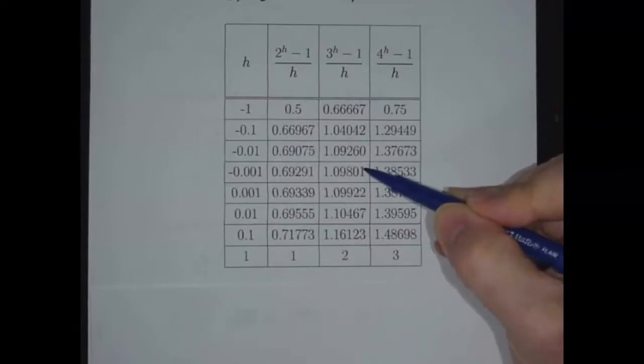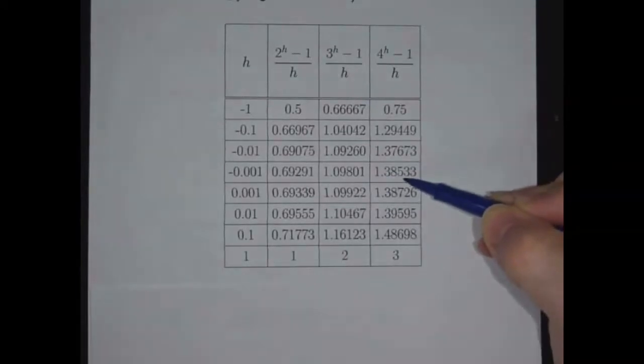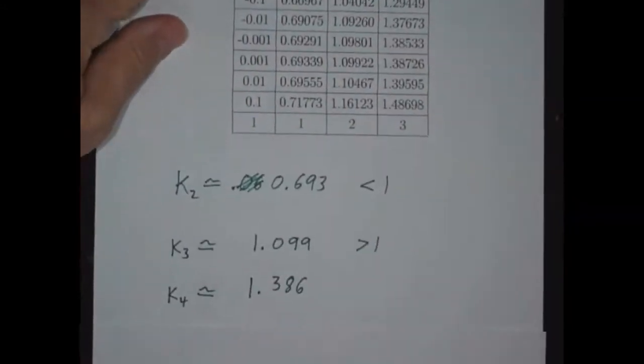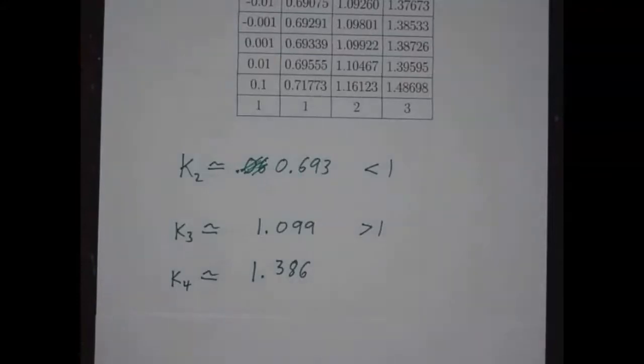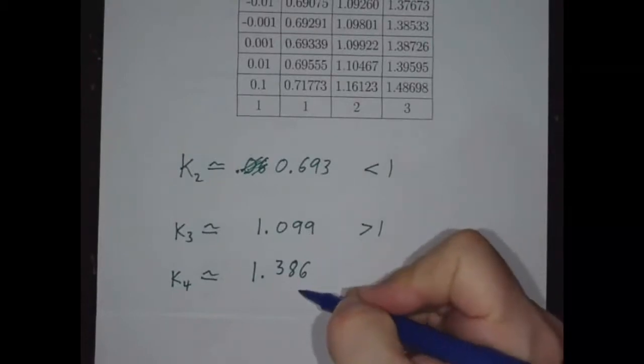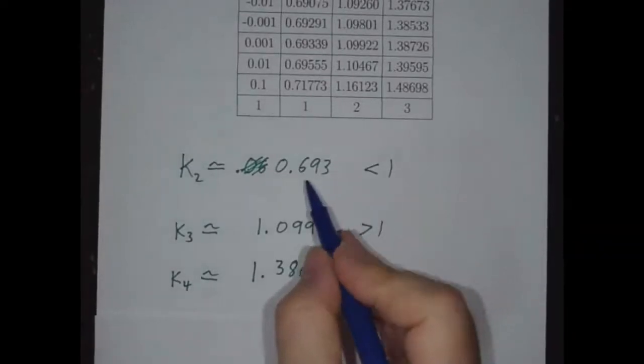And for a equals 3, we get a number that's around 1.099. And when a equals 4, we get a number around 1.386. So we don't know these numbers theoretically, but we know for 2, it's 0.693. For 3, it's 1.099. And for 4, it's 1.386. And the point is that this is less than 1.